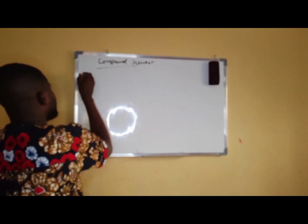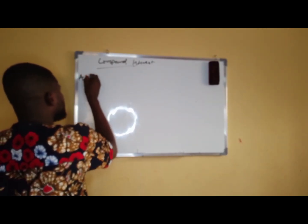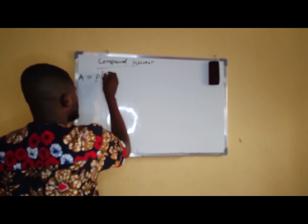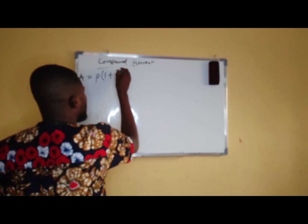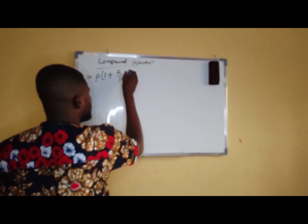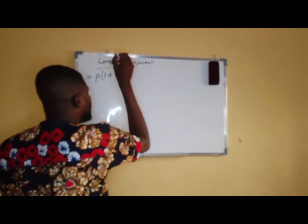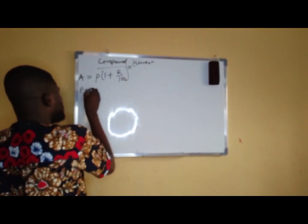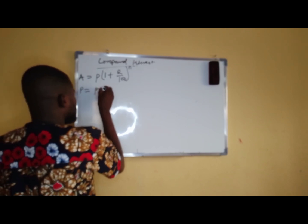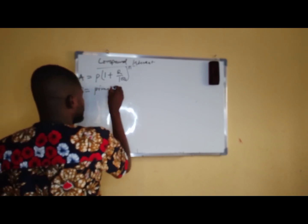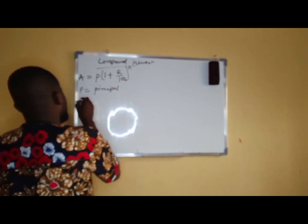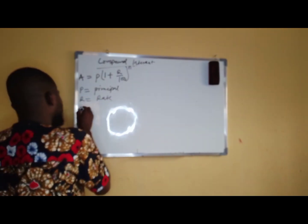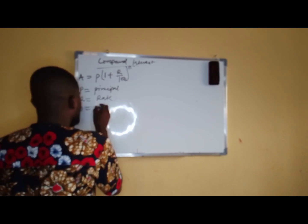We have that A, which is amount, is equal to P in bracket 1 plus R over 100, raised to power N. Where P is equal to the principal, R is equal to the rate, and N is the number of years.